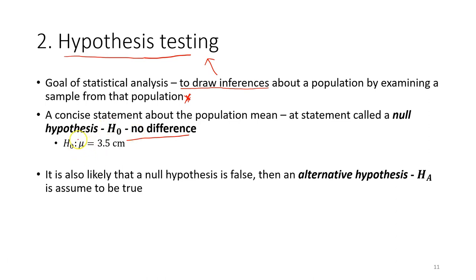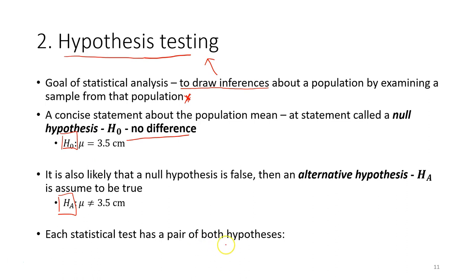This is our null hypothesis. On the other hand, we also have an alternative hypothesis, because it is very likely the null hypothesis will be false after we run the statistical test. If that is the case, we have an alternative hypothesis that we can assume to be true. Each statistical test has a pair of hypotheses — the null hypothesis and the alternative hypothesis.